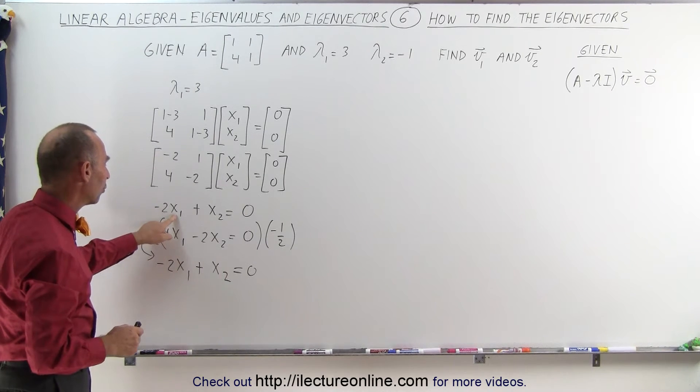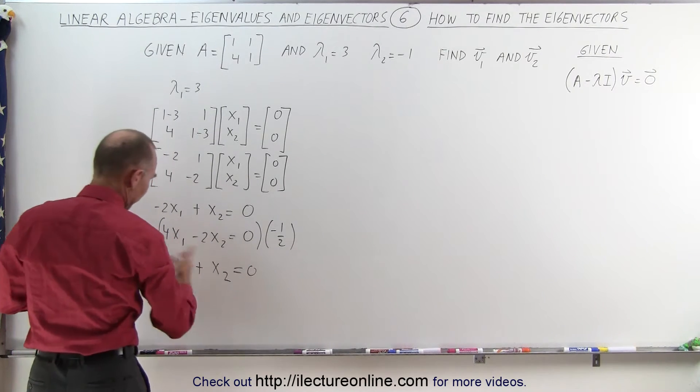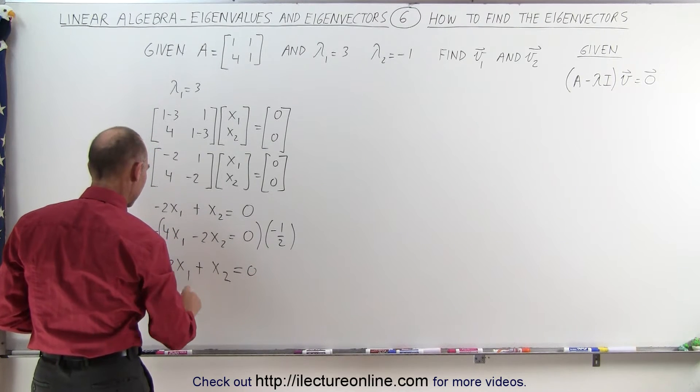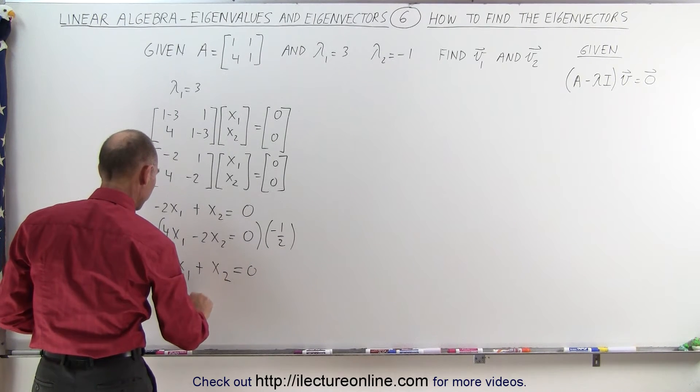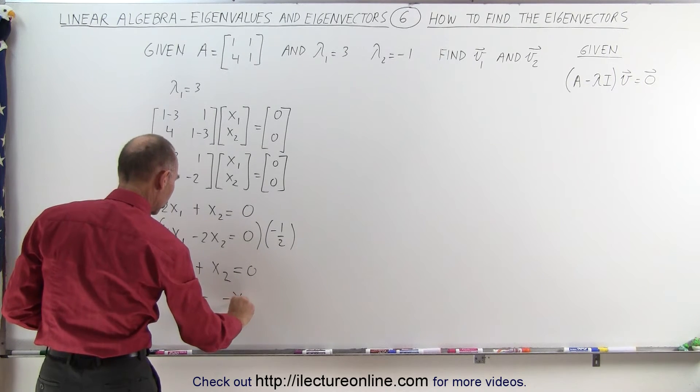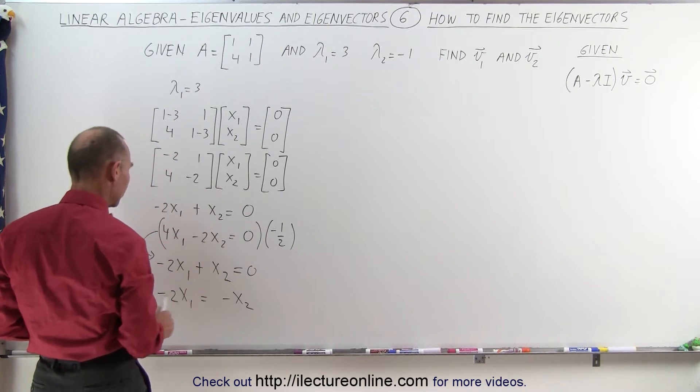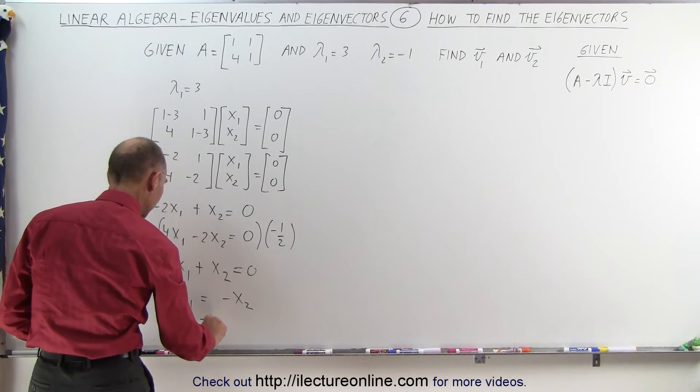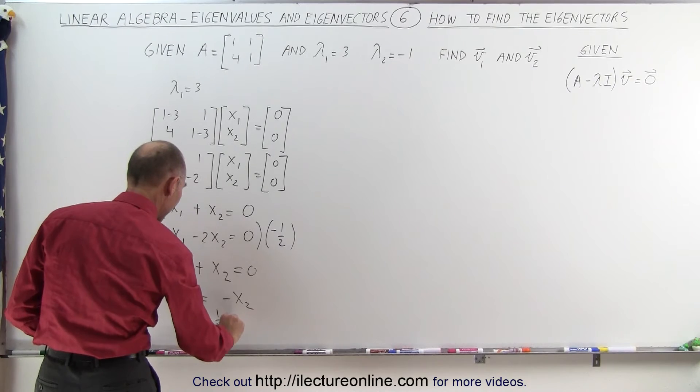If I solve this for x1, I'm going to move the x2 to the other side and divide by negative 2, so I get x1 is equal to negative x2. Now we'll divide both sides by minus 2, I get x1 is equal to 1 half x2.